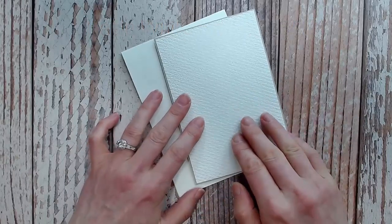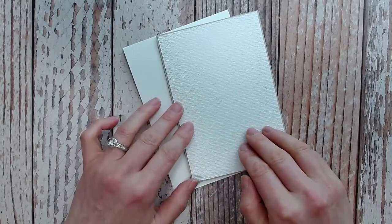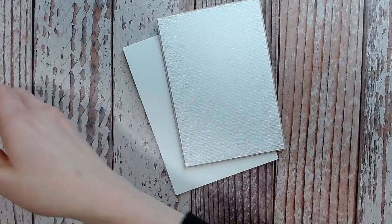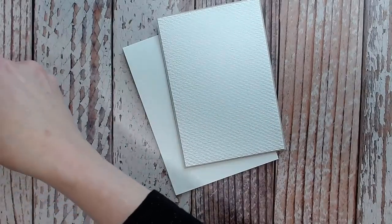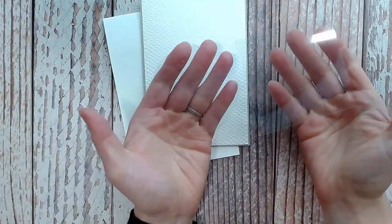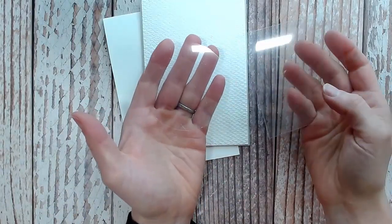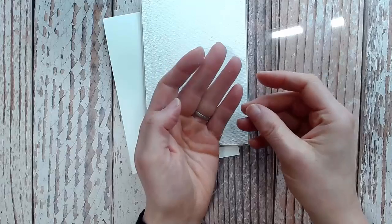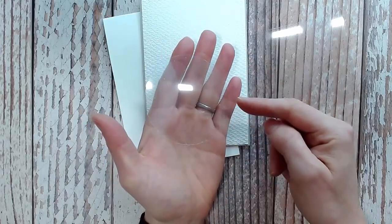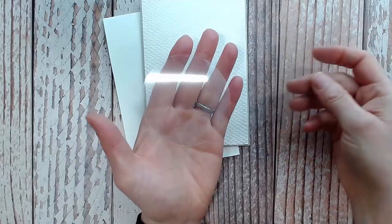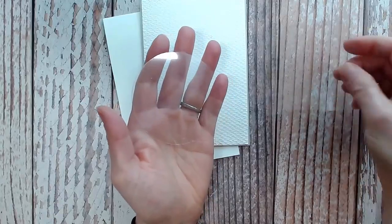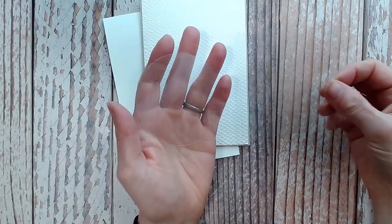I've gone ahead and embossed that with the tasteful texture folder just to give it a little bit of interest. Now to create that floating strip technique, you can start with either a square piece of acetate or you can go ahead and cut it to the shape that you want. I am going to go ahead and use the one that's already in a circle and I will explain why as we go along.